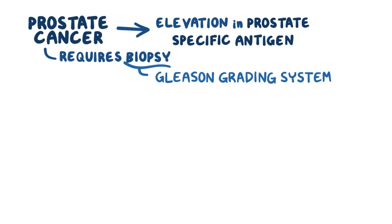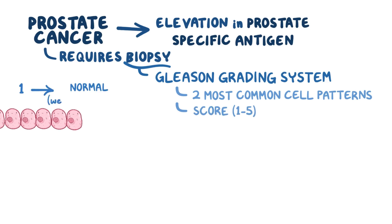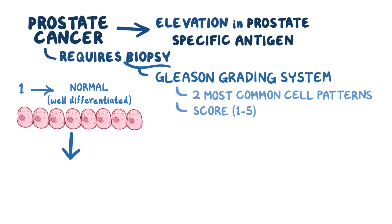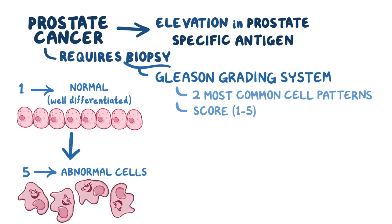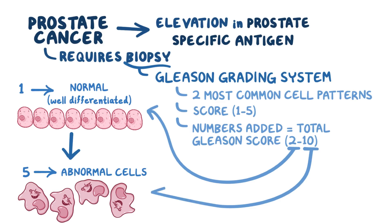The Gleason scale identifies the two most common cell patterns within the prostate tissue and assigns a score between 1 and 5 to both of them. A score of 1 represents normal, well-differentiated cells, and a score of 5 represents highly abnormal cells that barely resemble normal prostate tissue. Once the primary and secondary patterns have each received a score from 1 to 5, these two numbers are added together, resulting in a total Gleason score between 2 and 10, with 2 representing low-grade tumors and 10 representing high-grade, dangerous tumors.